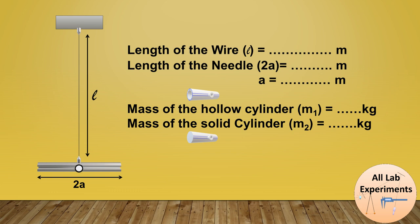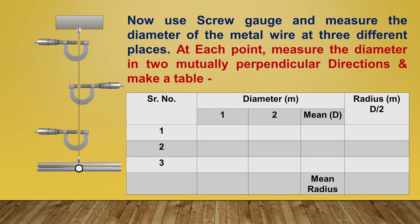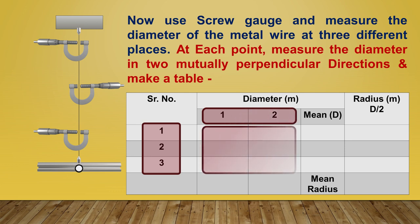Finally, we also require the radius of this wire. To do this, use a screw gauge and measure the diameter of the metal wire at three different places. At each point, measure the diameter in two mutually perpendicular directions and make a table. This quantity is highly important to measure because a small error in this parameter may cause a big error in your results.